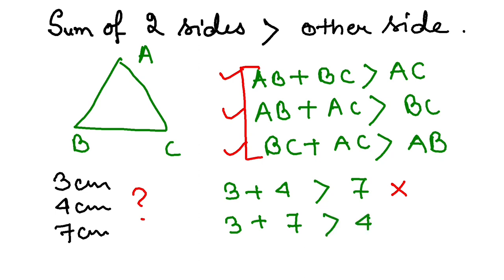But if I take 3 plus 7, that's 10, obviously greater than 4. And then I can have 7 plus 4, that is 11, obviously greater than 3.